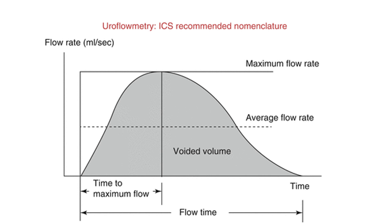This is the first graph — a normal uroflowmetry graph, which is a bell-shaped graph. This bell-shaped curve is the normal curve. If this graph is straight, prolonged, or has a sharp rise, these things show abnormalities. The x-axis represents time, and the y-axis shows flow rate calculated in ml per second. The upper part shows the maximum flow rate, and the colored area represents the voided volume.